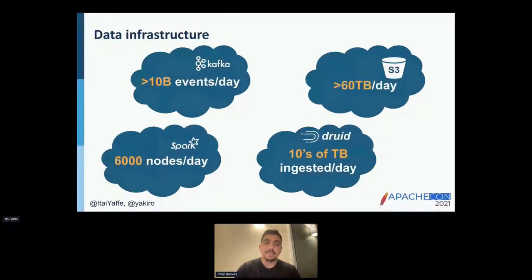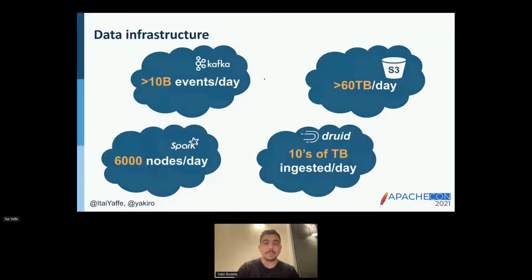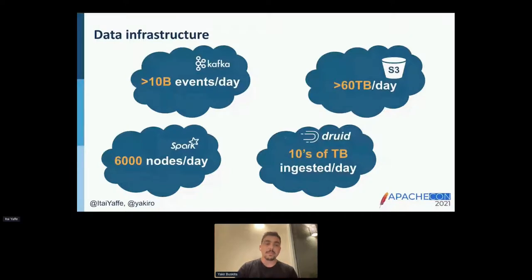Nielsen has a very extensive data infrastructure. We're focusing on Nielsen Identity's infrastructure, and the scale is significant: more than 10 billion events processed daily on Kafka clusters, more than 60 terabytes ingested daily into S3, over 5 petabytes of data on the data lake, more than 6,000 Spark nodes running daily, and tens of terabytes of data ingested into Druid on a daily basis.